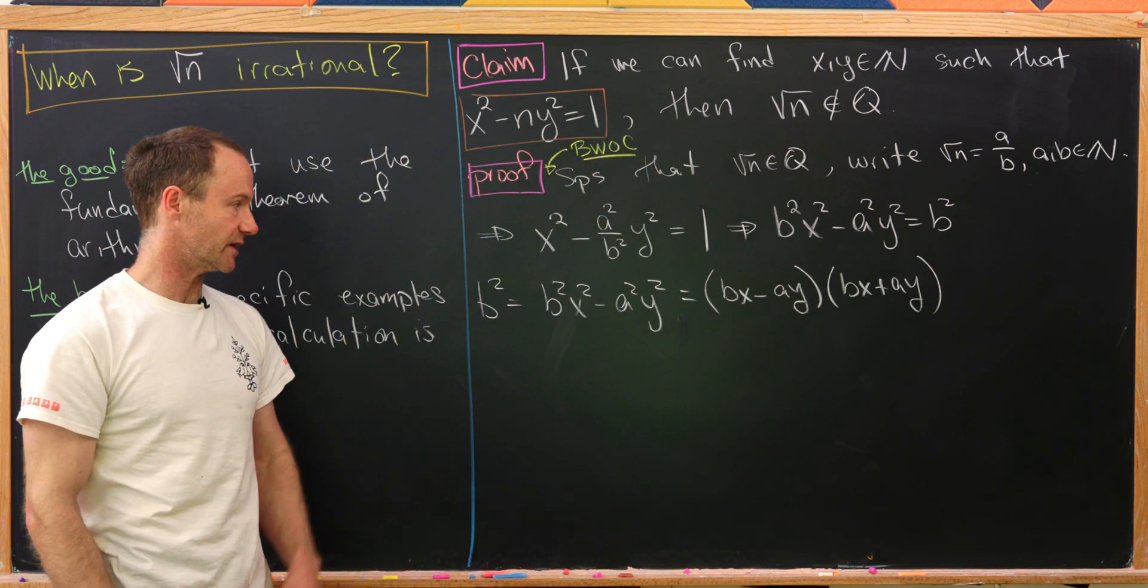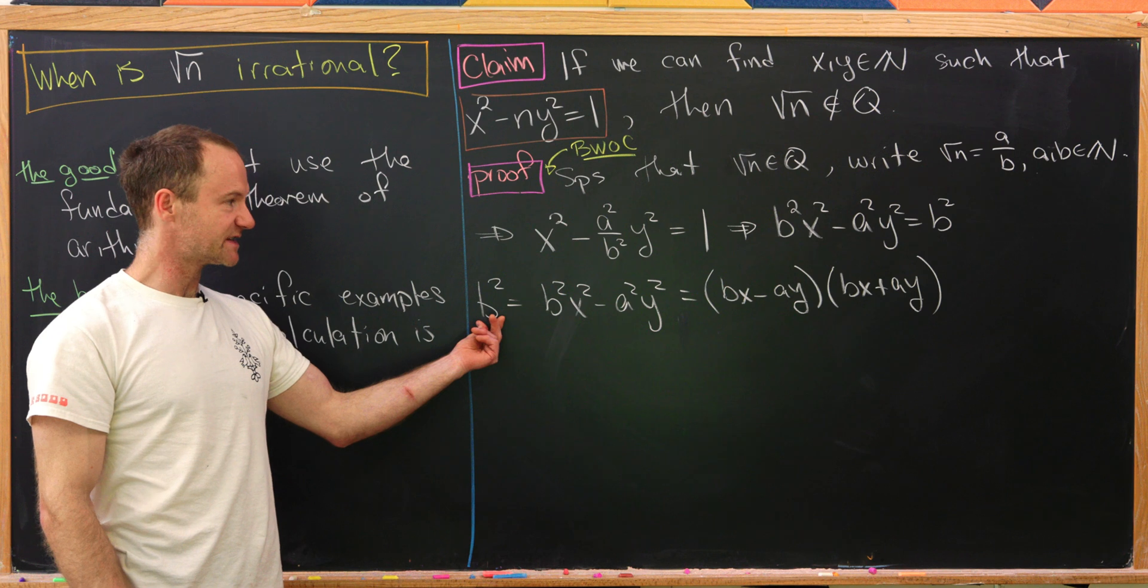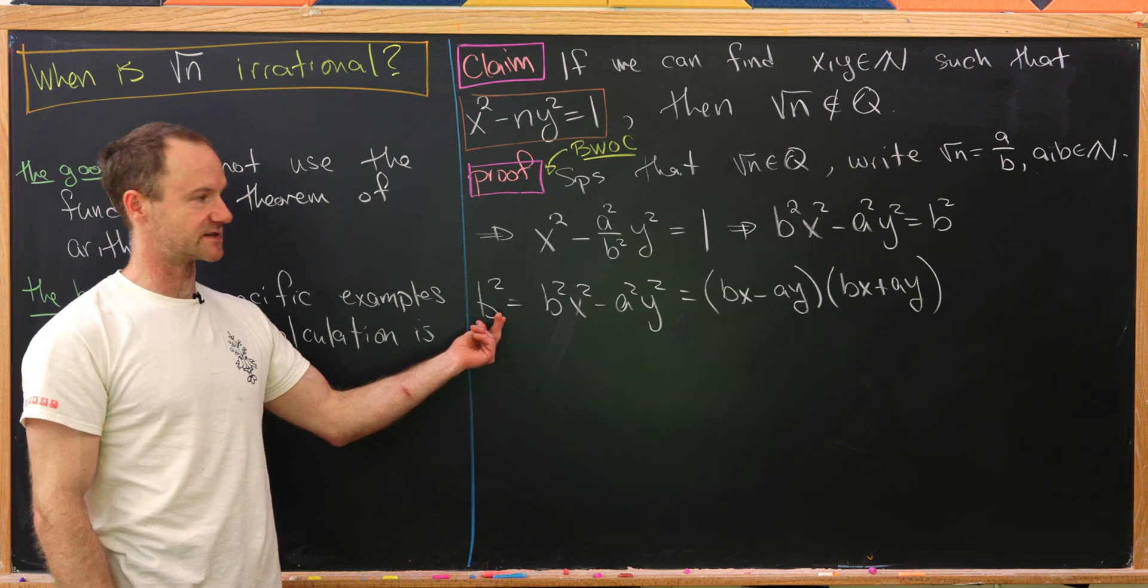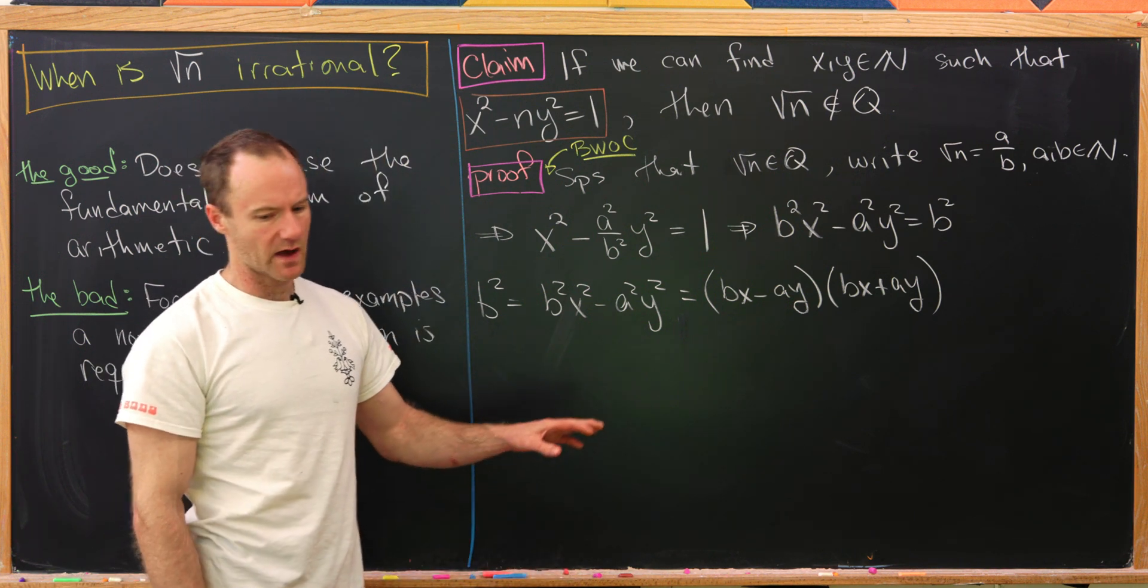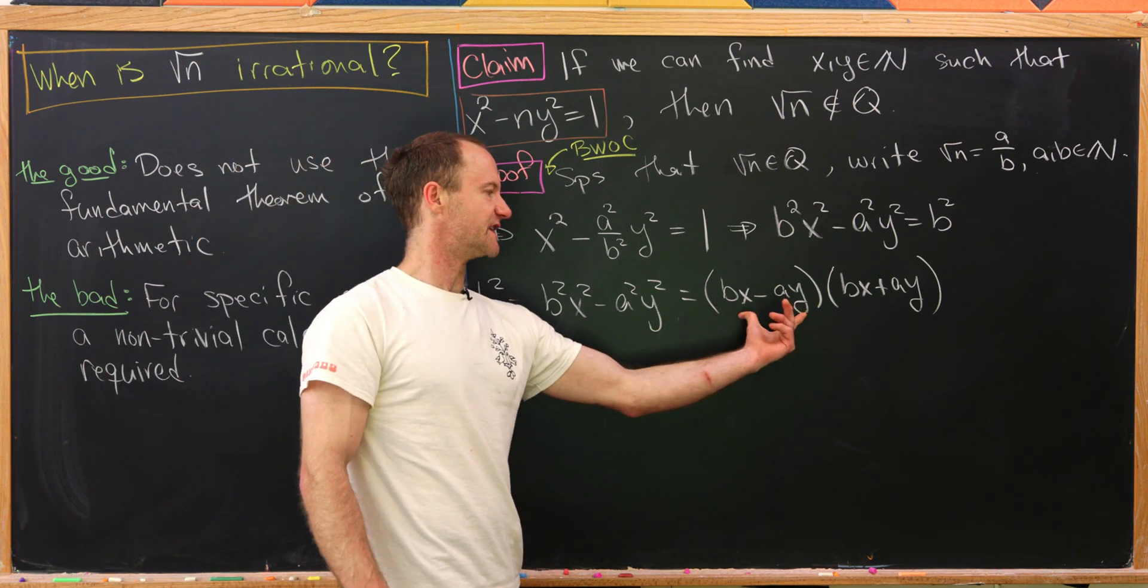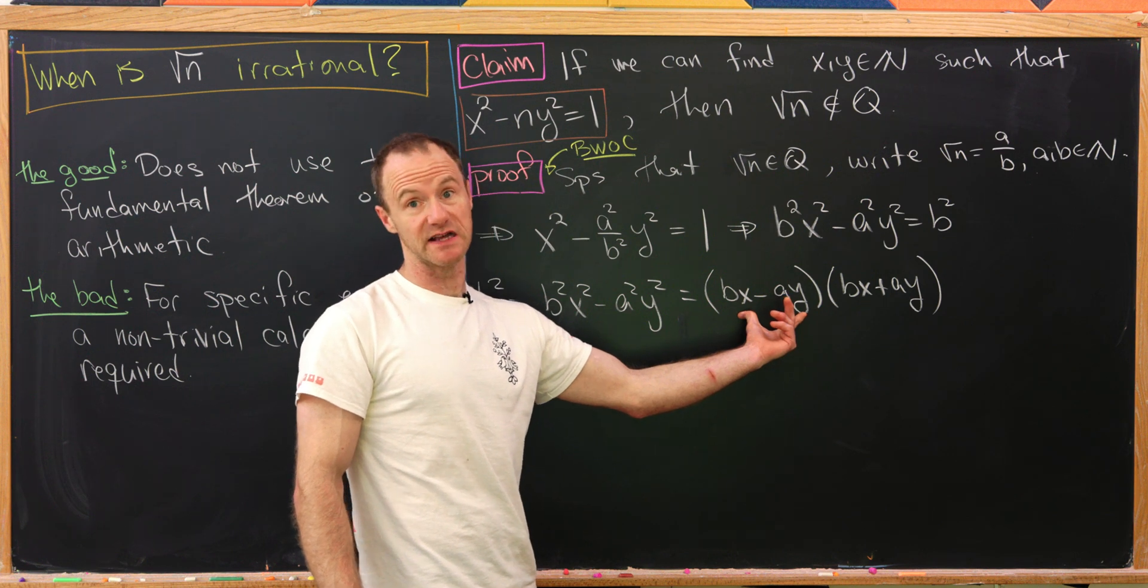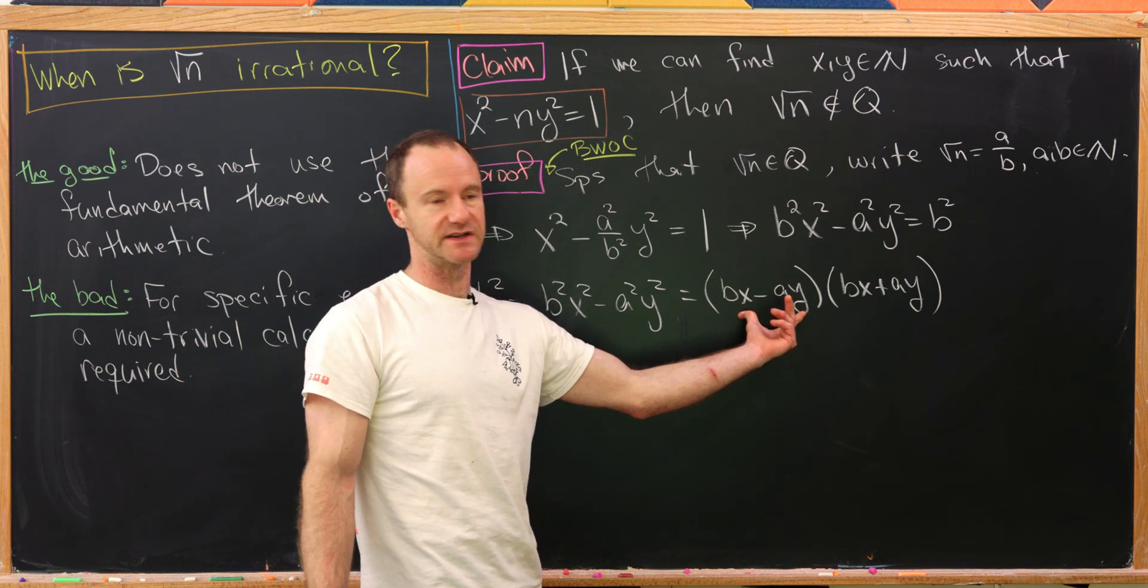I think that looks pretty good. Now since this b squared is positive, that means both of these are positive. What I'll do is just get rid of this term right here, which is a positive term by our previous discussion.